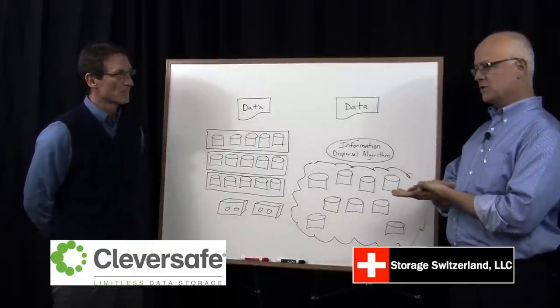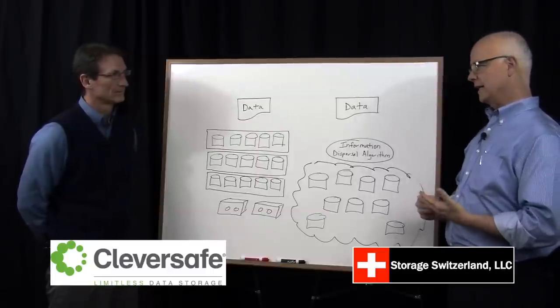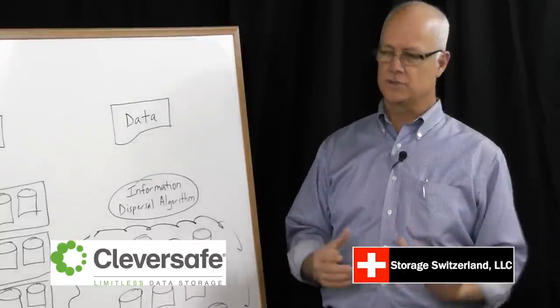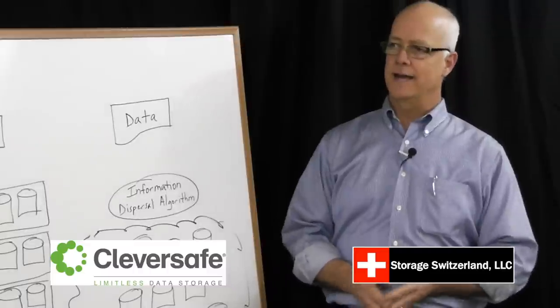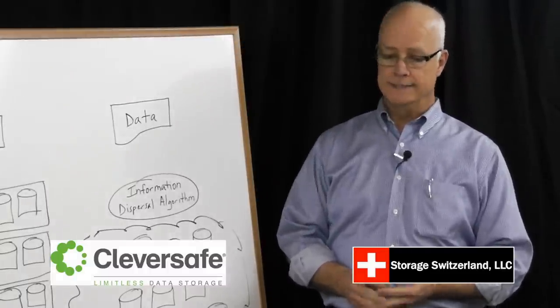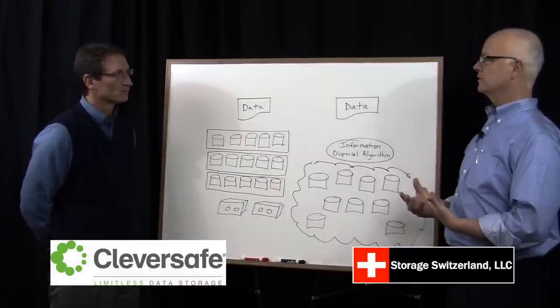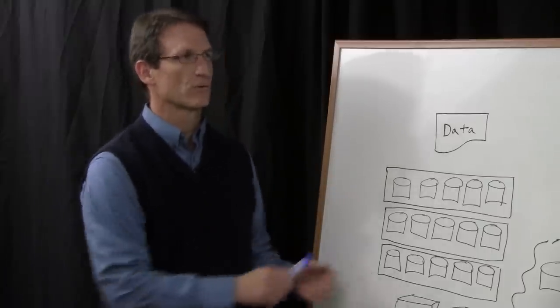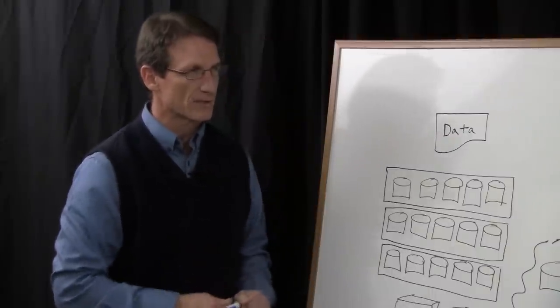Russ, as you know, object storage or an object-based architecture stores data in discrete containers called objects, and this abstraction really produces some unique characteristics. One of those is what you guys call information dispersal. Can you explain information dispersal and contrast that with traditional storage architecture? Sure, happy to Eric.